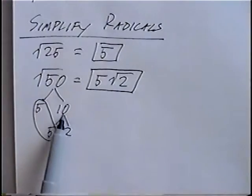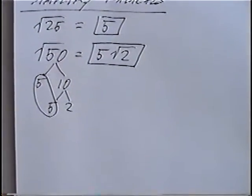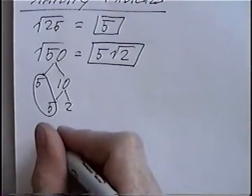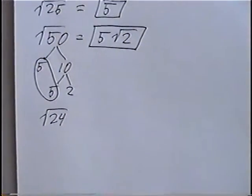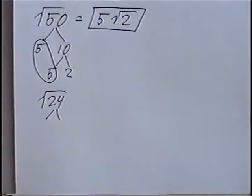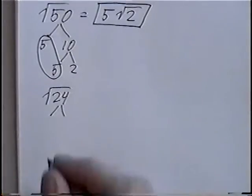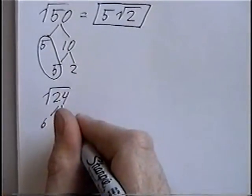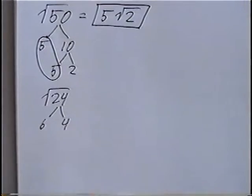For the factor tree we don't use the 50 or the 10 — we only use the numbers at the bottom of the factor tree. The next question is square root of 24. Again there's no number times itself that equals 24, so we'll do a factor tree on 24, picking two numbers that multiply to get 24. You could do 6 times 4, 12 times 2, or 8 times 3. Any two numbers will get you the same answer.